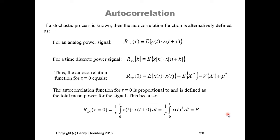If a stochastic process is known, then the autocorrelation function can alternatively be defined — for the analog power signal — as the expected value of two stochastic variables. This comes from the fact that when we fix the time for a stochastic process, what we get is a stochastic variable. Two of those are x(t) and x(t + τ), where τ is the time-shift between the time points. For a time-discrete power signal, we have a similar definition except that k defines the difference in number of samples: the expected value of x(n) times x(n + k).